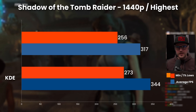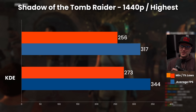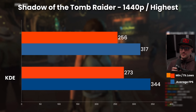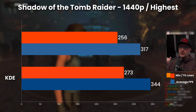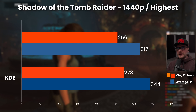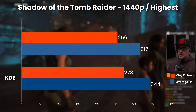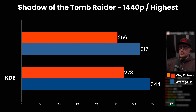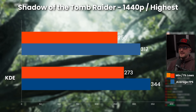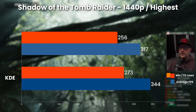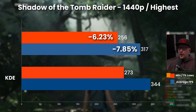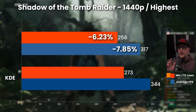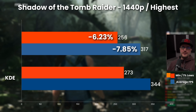Let's start with Shadow of the Tomb Raider — one of my favorite benchmarks. It's running native. Right away, you can see that on KDE we were running at 344 FPS average with a minimum of 273. Switching to Hyprland, we went down to 317 FPS average and a minimum of 256. So we lost almost 8% on the average and around 6.2% on the minimum. Pretty rough for Hyprland on this one.